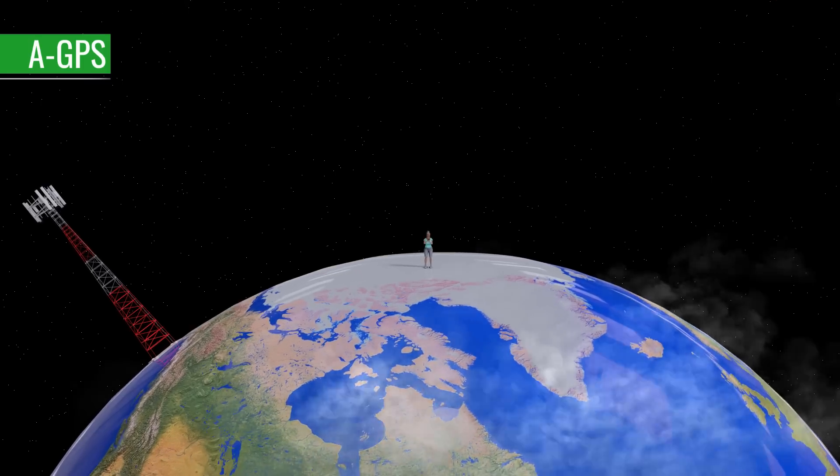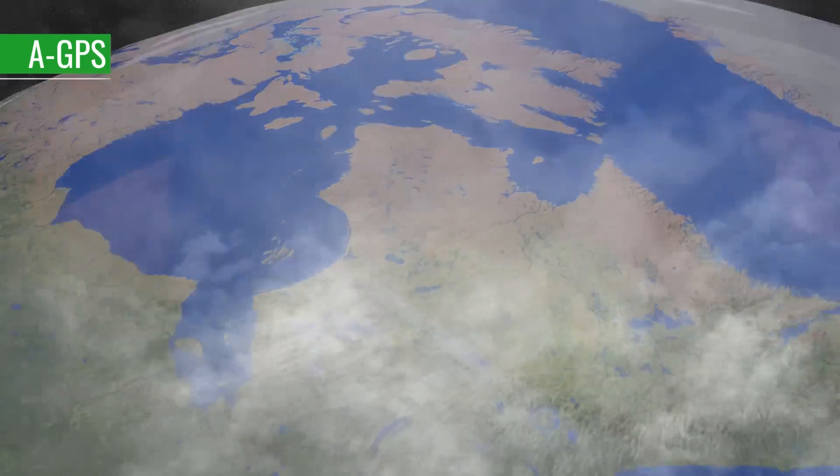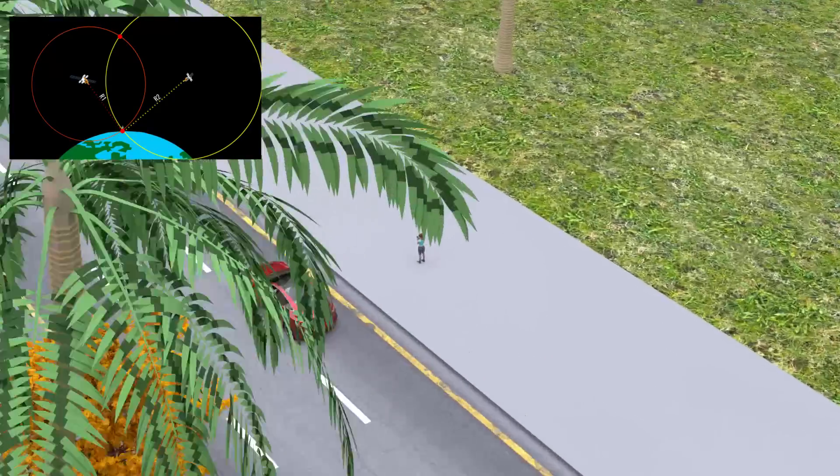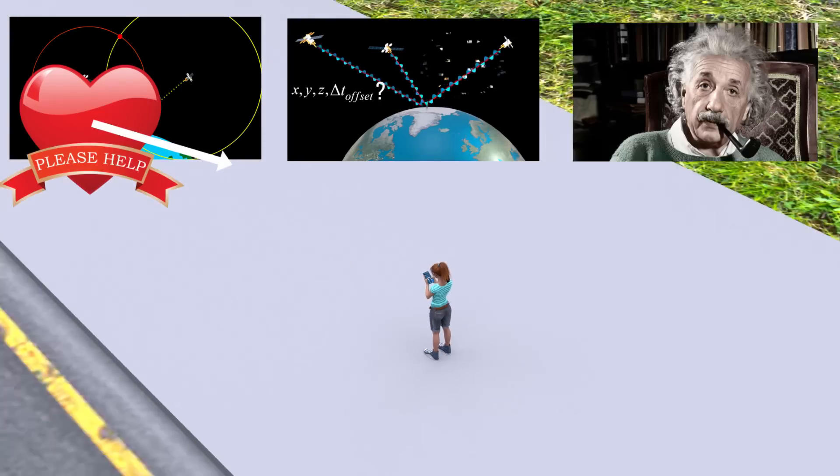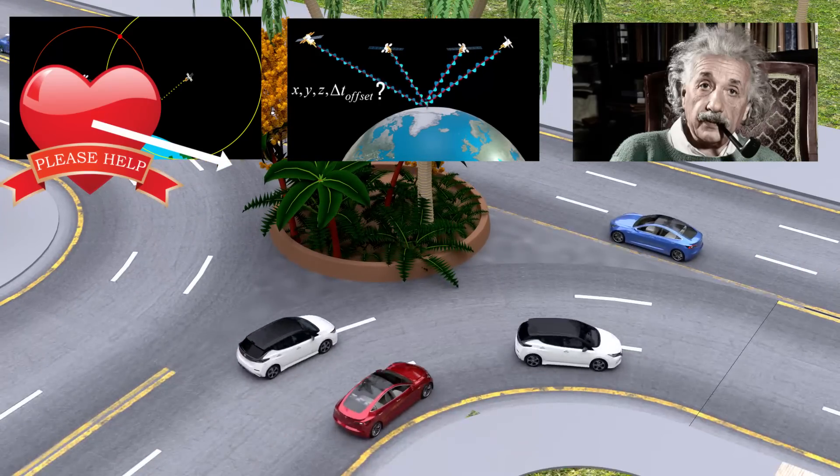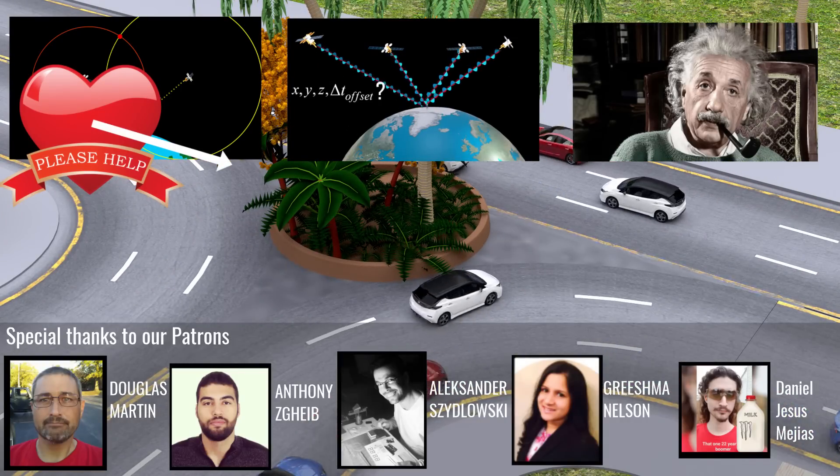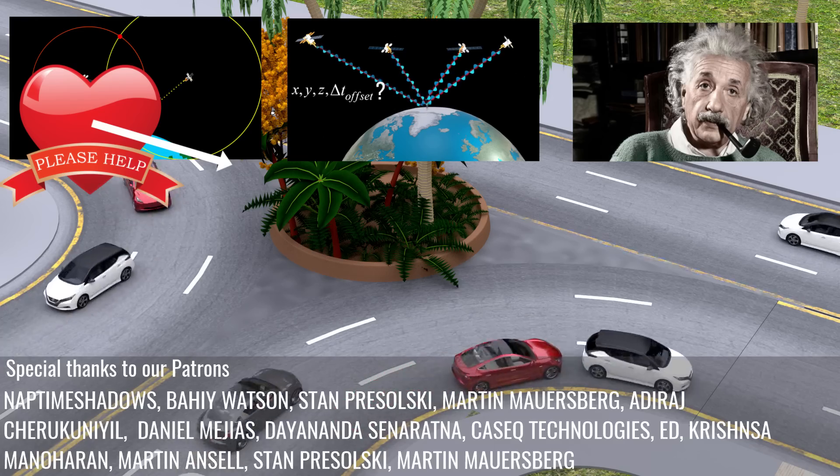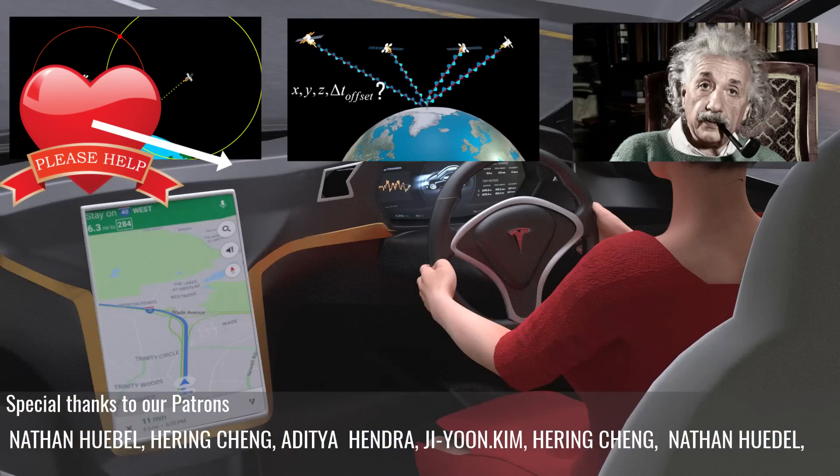So, the next time you track your food delivery or navigate your car, please keep in mind how important the theory of relativity developed by Einstein and the other mathematical ideas are behind GPS. Thank you for watching the video and please, don't forget to press the support button.